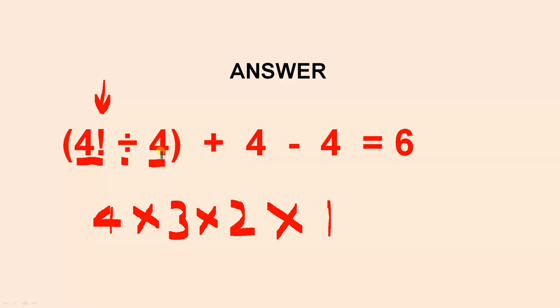Now, when you divide that by 4, that gives you 6. If you add 4, that gives you 10, and then you take 4 away, and you're back to 6. But the clue to this puzzle is understanding what this means, 4 factorial, and how to use it.